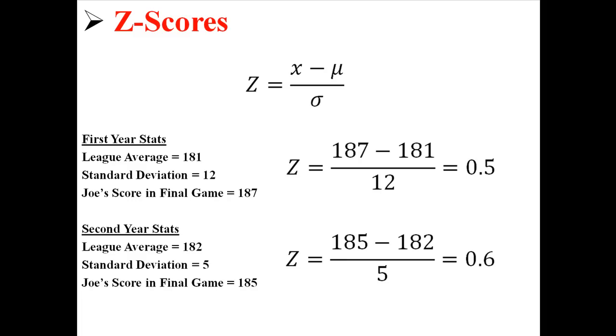Now for the second one, I put in Joe's score of 185, which is x, I put in the league average, the population mean, which is 182, and I put in the standard deviation, which is 5. And I get a z-score of 0.6, which means we are 0.6 standard deviations above the mean.